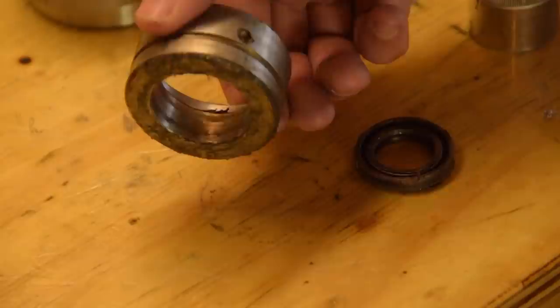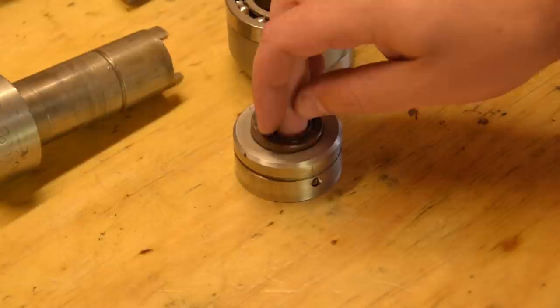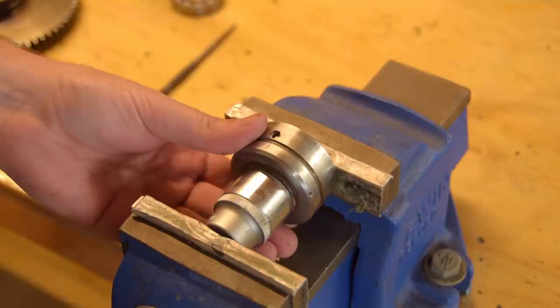I thought that the recess for this oil seal and a bearing was machined into the body of the drill. But there is actually a steel collar instead. So that makes things easier. I can install the seal and bearing on the bench.